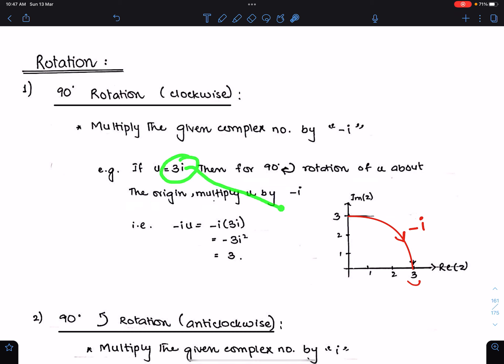This 3i is here on the Argand diagram. When this number 3i is rotated 90 degrees in clockwise direction about the origin, then this 3i will come here. So this 3i is multiplied by minus i.